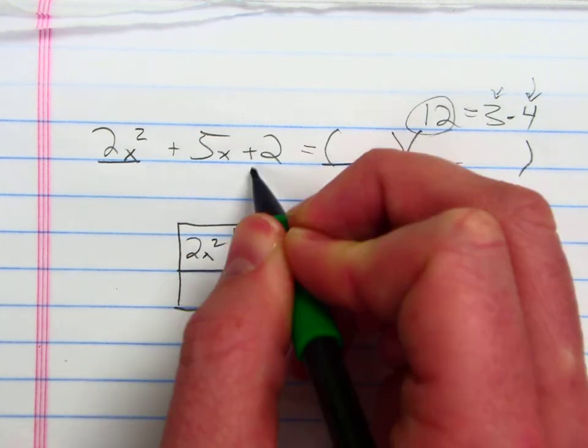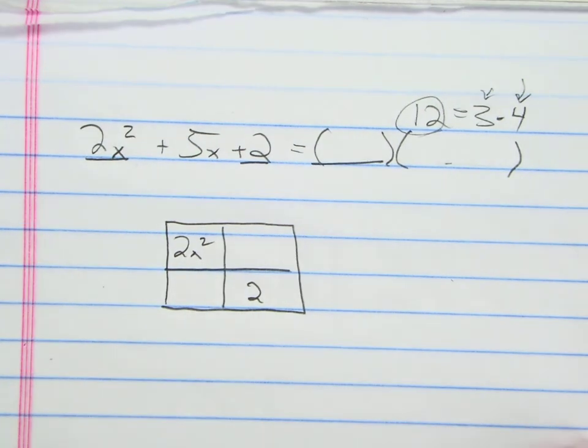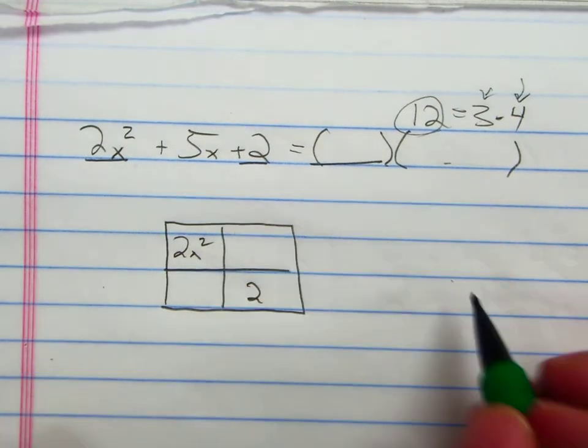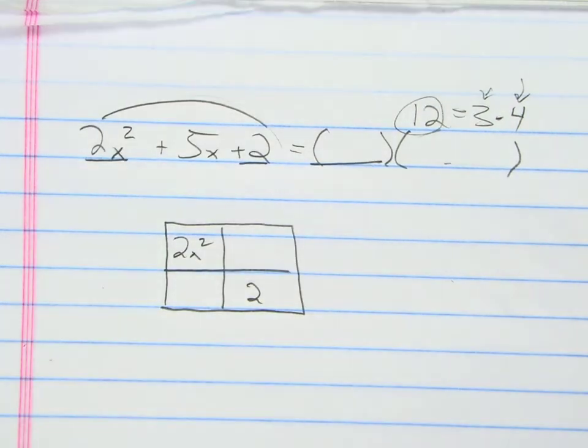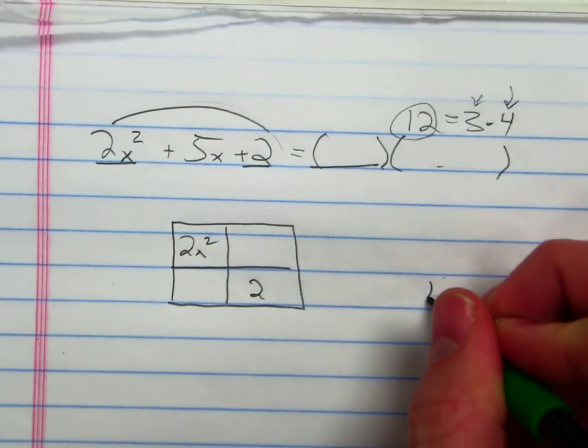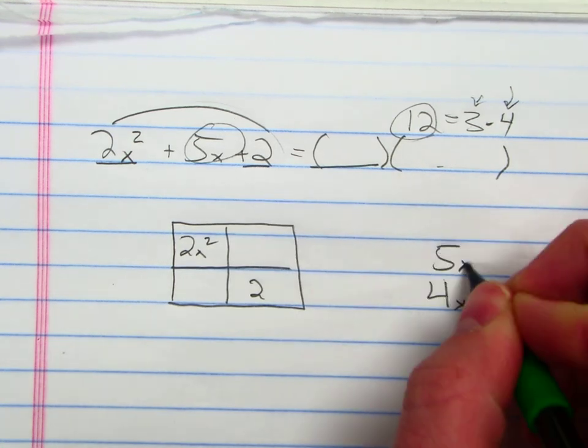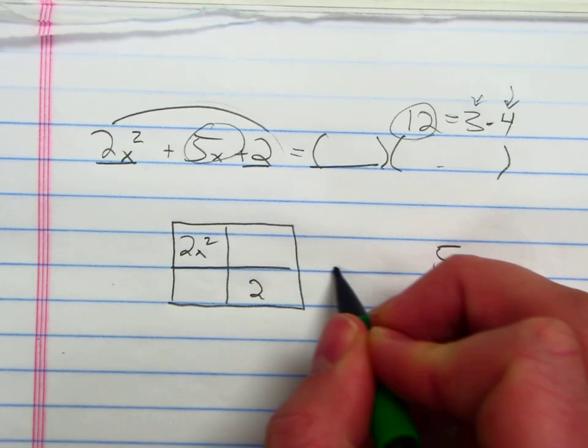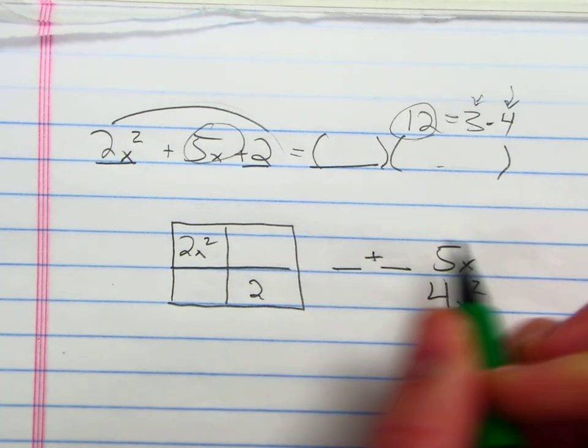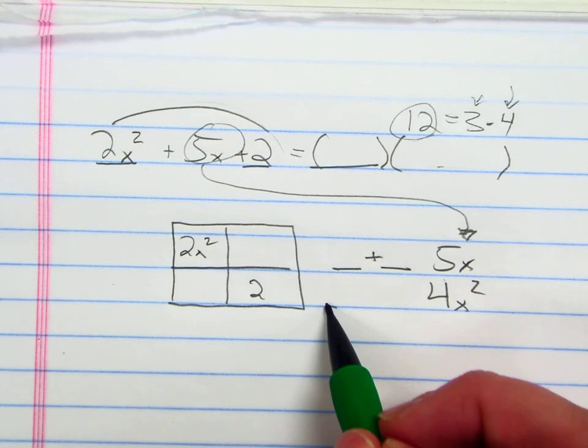Then what I want to do is I want to multiply my first and my last term together. Whenever I multiply 2x squared times 2, I get 4x squared. I then want to take my middle term and put it here. And this is the tricky part of this factoring process. I want to find out what two things can I add to give me 5x for my middle term, and what two things can I multiply to give me 4x squared, the product of my first and last term.